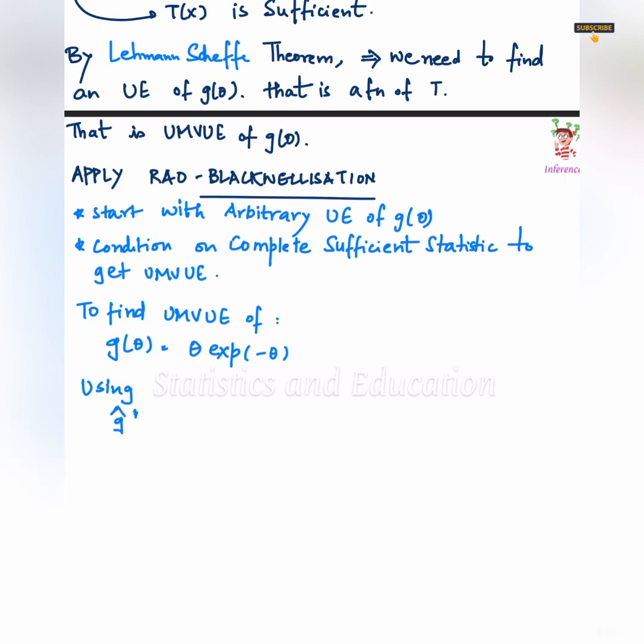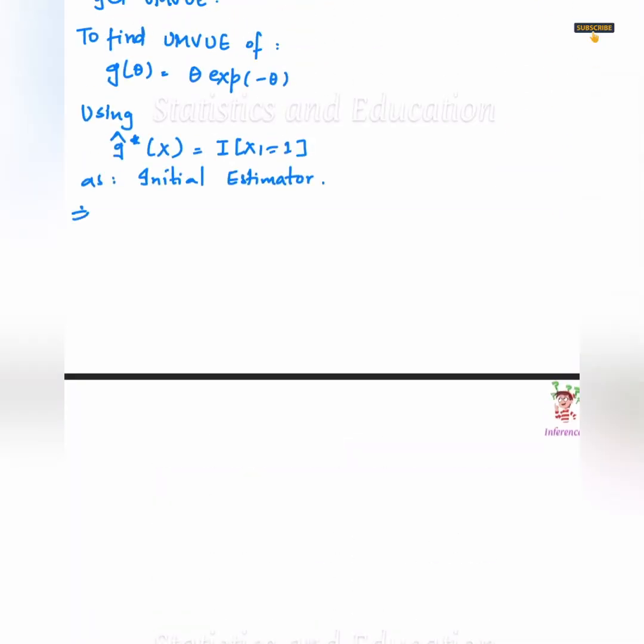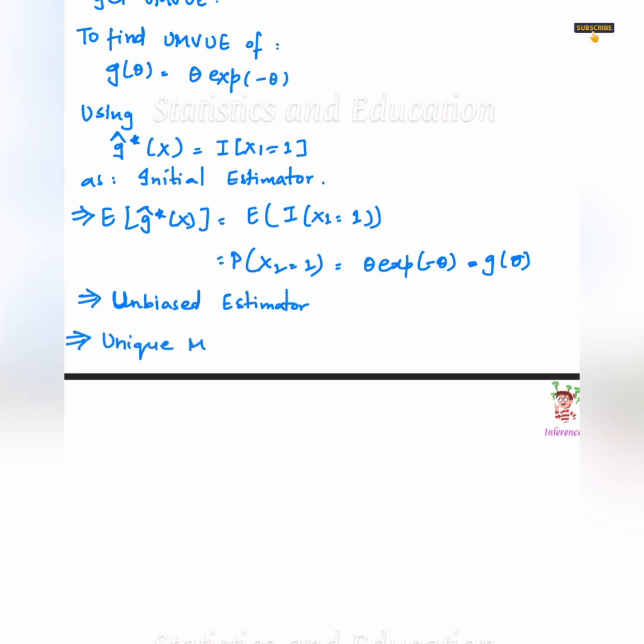In these questions we normally define an indicator variable, let's do it here as well. The indicator variable will take value 1 if x is equal to 1. The expectation of this estimator is probability x1 equals to 1 which is theta e to the power minus theta, so this estimator is an unbiased estimator.